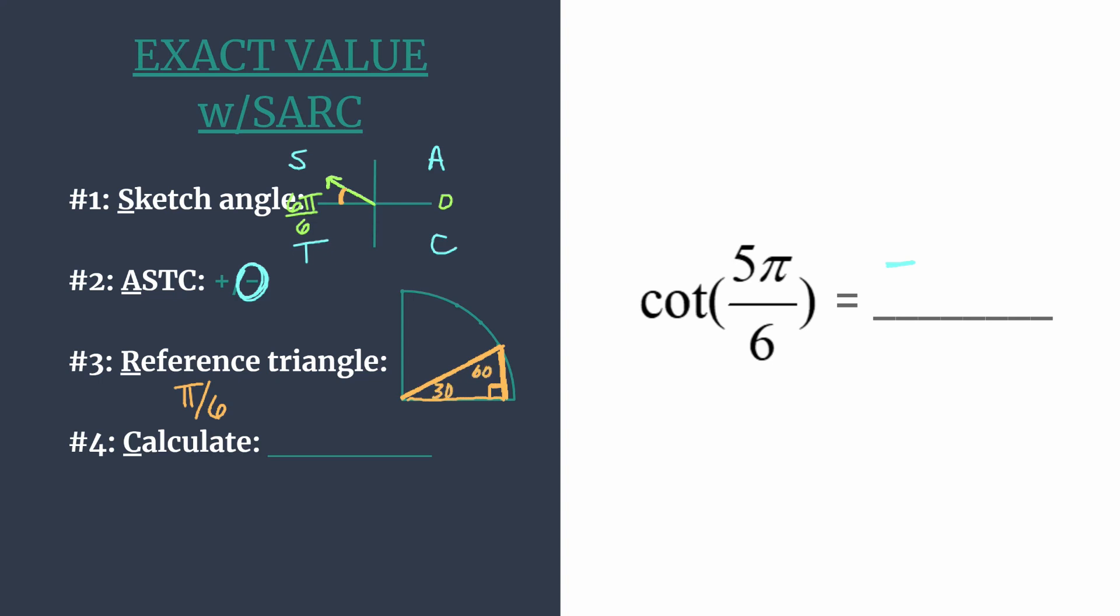And you may need to go and refresh on your properties of special right triangles. If you do, I'll post some links in the video description. So check those out, unit circle basics. But we should know, once we've been doing exact values for a little bit, that our x-coordinate for this triangle on the unit circle is square root of 3 over 2. And our y-coordinate is 1 half.